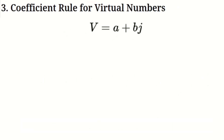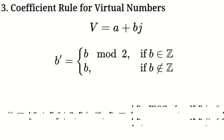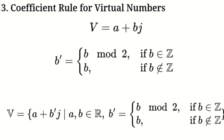The coefficient rule. Now, let's look at the coefficient rule, which tells us how to handle the virtual coefficient B. If B is an integer, meaning a whole number, we apply a rule called modulo 2. In simpler terms, if B is an even number, we set it to zero. If B is an odd number, we set it to one. So if B is an integer, we either make it zero or one, depending on whether it's even or odd. If B is not an integer — say it's a fraction or a decimal — it stays the same. This rule helps keep things consistent when we perform operations with virtual numbers.